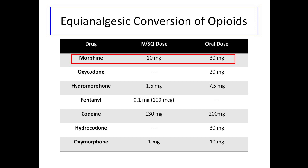For example, 10 milligrams of IV morphine is equivalent to 30 milligrams of oral morphine. To convert to OMEs, take a patient on 40 milligrams of oxycodone. Since 20 milligrams of oxycodone is equivalent to 30 milligrams of oral morphine, you can multiply the oxycodone dose by 1.5 to obtain the equivalent OMEs. Therefore, 40 milligrams of oxycodone times 1.5 equals 60 OME.